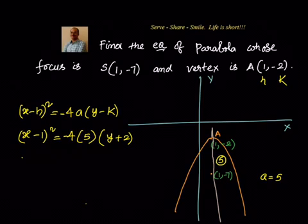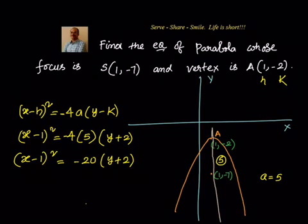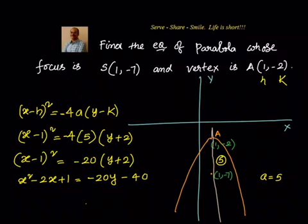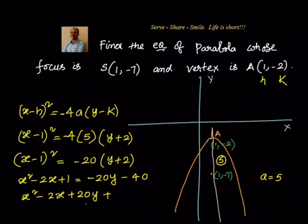We can simplify: x² - 2x + 1 = -20y - 40. Bringing everything to one side gives us x² - 2x + 20y + 41 = 0.